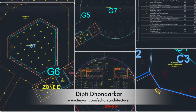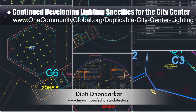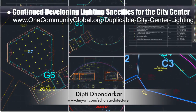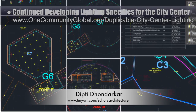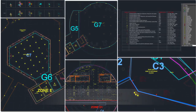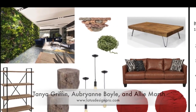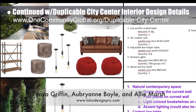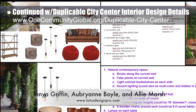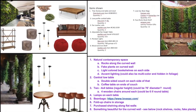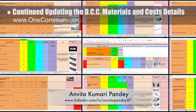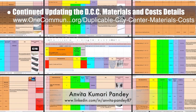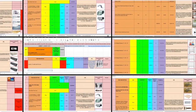Dipti Dondecker, electrical engineer, also continued developing the lighting specifics for the city center. This is Dipti's 108th week volunteering on this task. The focus this week was updating all the layers so we can turn lights on and off easily for each zone and adding the missing lights for the social dome main wall, kitchen, fourth floor, and living dome sunrise patio. Tanya Griffin, Aubrey Ann Boyle, and Ali Marsh, interior designers from Lotus Designs, also completed their second week helping with the duplicable city center interior design details, finalizing the direction of the theme, decor, and general uses for the library. Anvita Kumari Pandey, civil engineer, also continued updating the duplicable city center materials and cost details by fixing the remaining images on the spreadsheet and making minor updates to some of the prices and URLs.